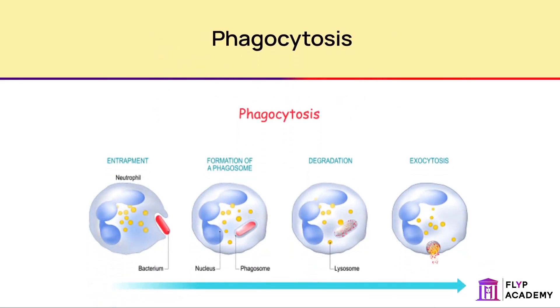Phagocytes engulf and digest pathogens. They extend their cell membrane to cover the pathogen and then break it down using enzymes. This process is called phagocytosis.